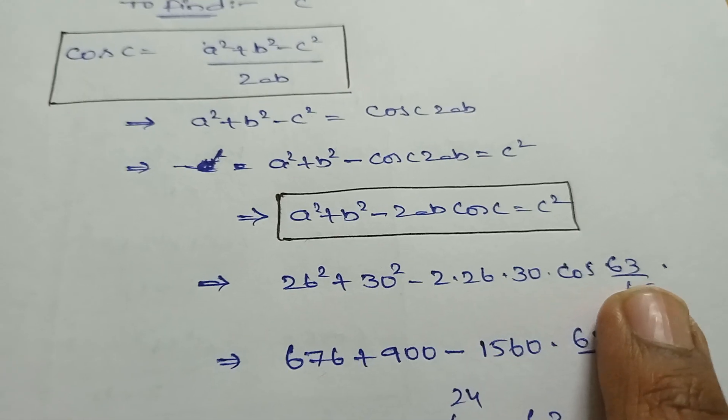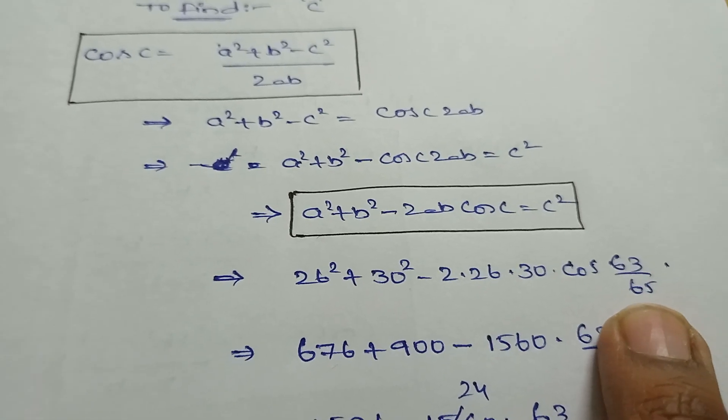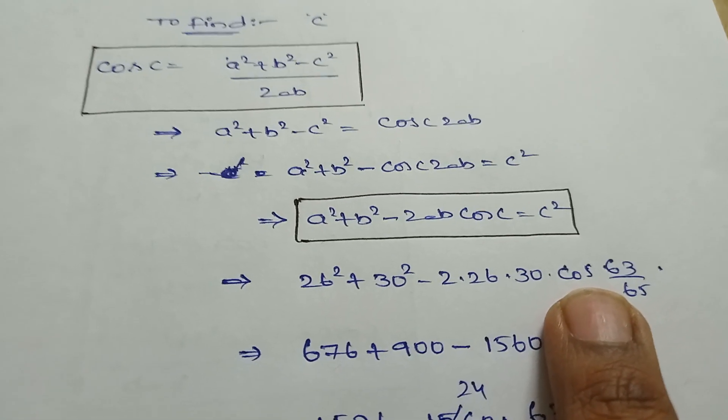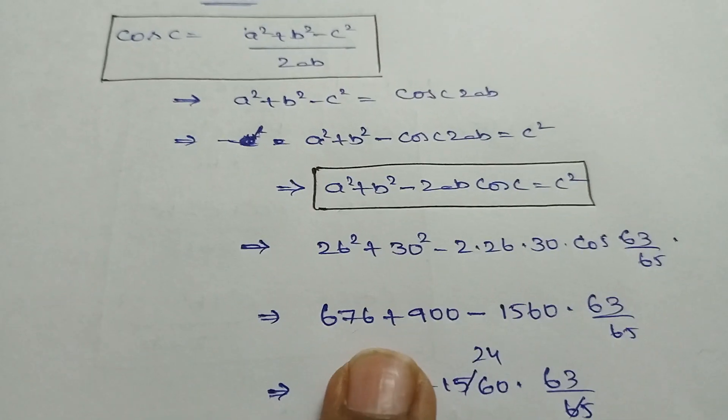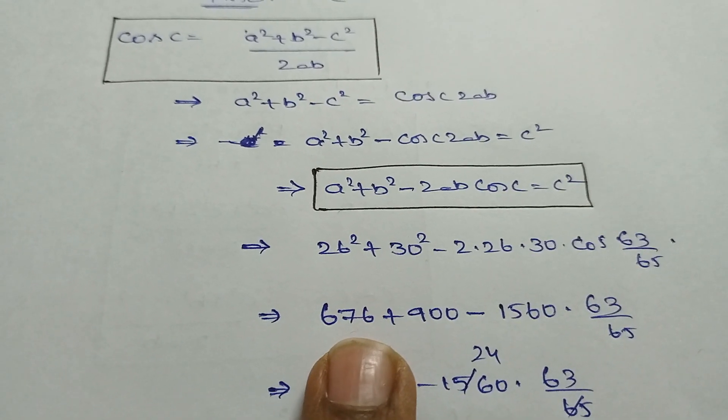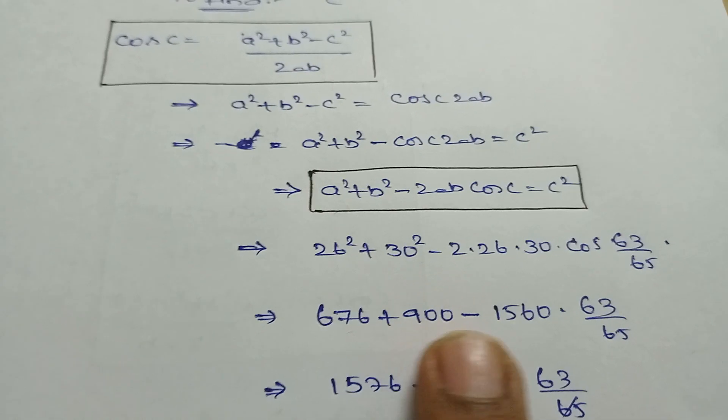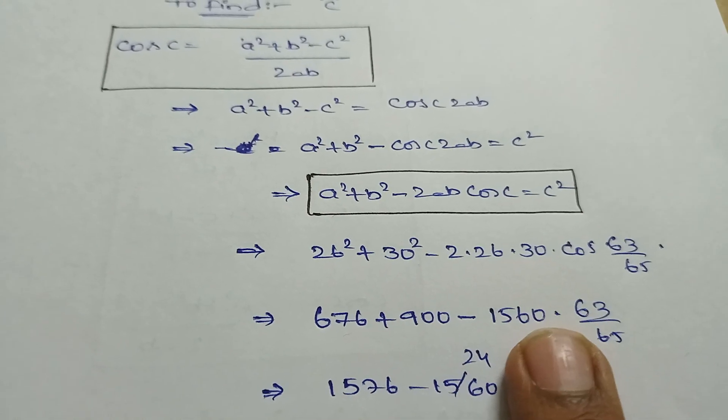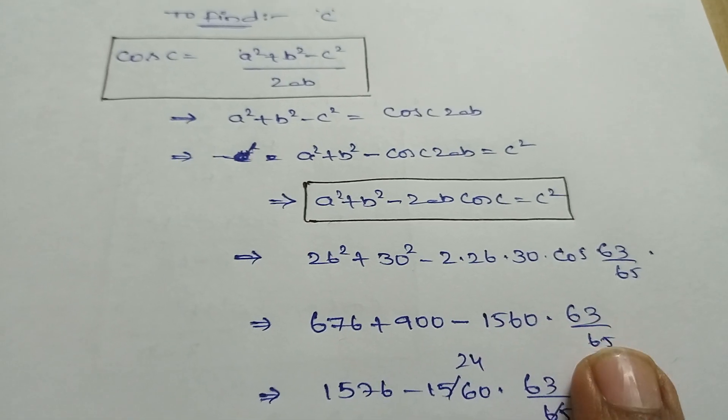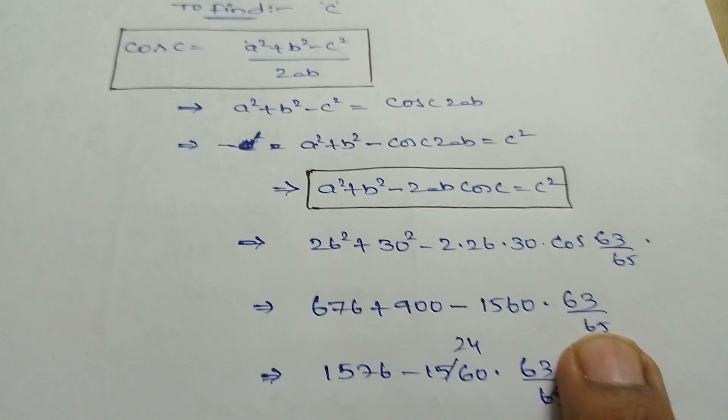You can eliminate the cos term in the next step. So, 26² is 676, 30² is 900, minus this total. Simple equation is 1560 into 63/65. In 65 table it goes 24 times, so 1576.